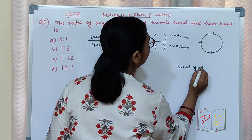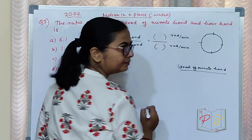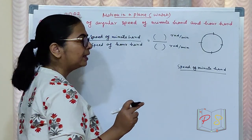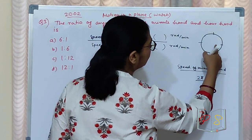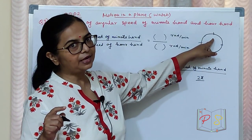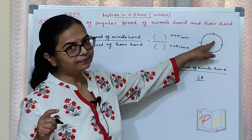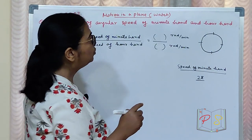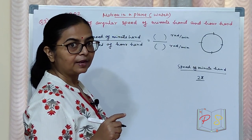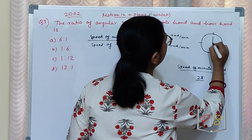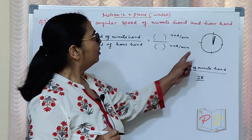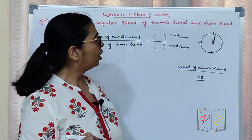Speed of minute hand. The minute hand covers 2π radians — how much time does it take? It comes back to the same position in 60 minutes. So in 60 minutes it covers 2π radians. That means the speed is 2π divided by 60 — that is the speed of the minute hand per minute.